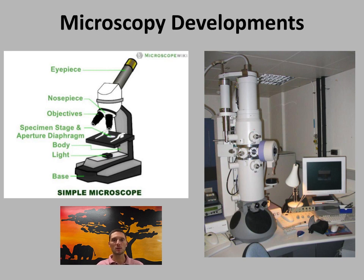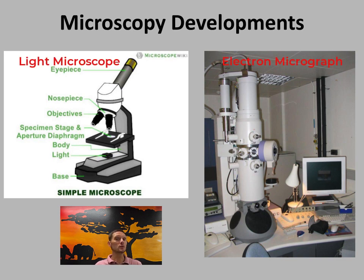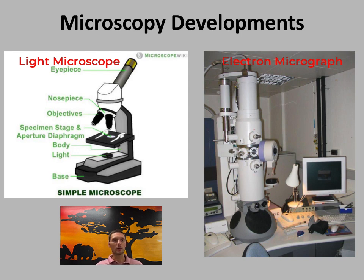There are a couple of different types of microscopes. The ones typically used in a classroom are light microscopes, which use light to observe the specimen. They typically don't kill the specimen, and you can sometimes even see organisms moving. More recent advancements in the 1930s are electron microscopes, which use beams of electrons instead of light. These are much more powerful — they can magnify up to a million times rather than just the 400x of light microscopes — allowing much smaller objects to be viewed.